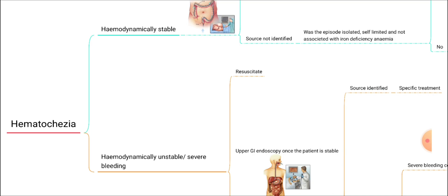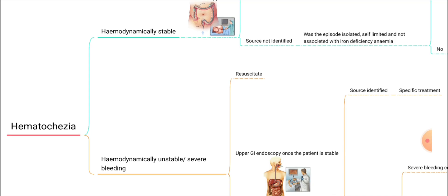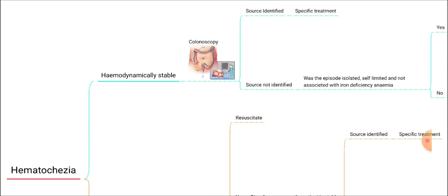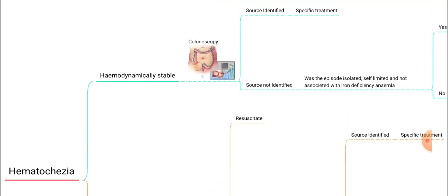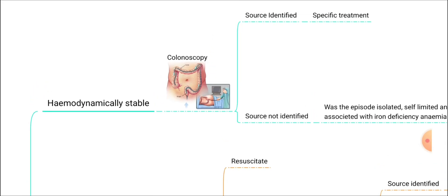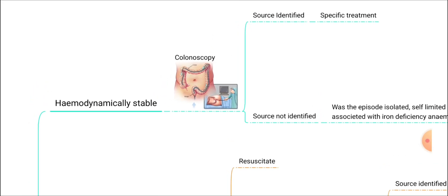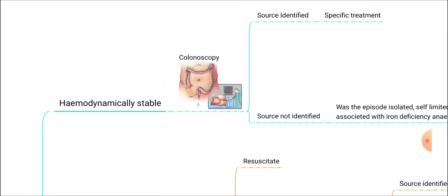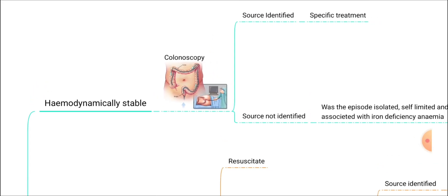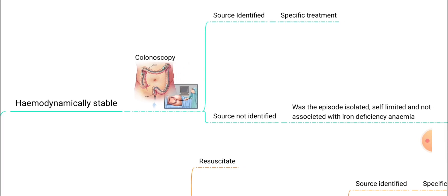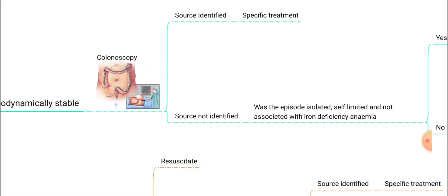When a patient presents with hematochezia, we should see whether the patient is hemodynamically stable or not. If the patient is hemodynamically stable, the initial investigation of choice is colonoscopy. In the colonoscopy, if the source is identified, we can do the specific treatment.